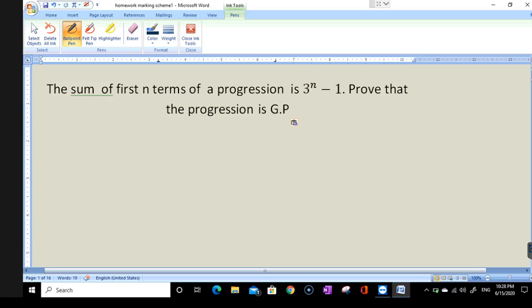Hi, we were given the question: the sum of first n terms of a progression is 3^n - 1. Prove that the progression is GP. For the progression to be GP, there must be a common ratio. We have to find a few terms, then check whether there is a common ratio. If there is, then the progression will be GP.